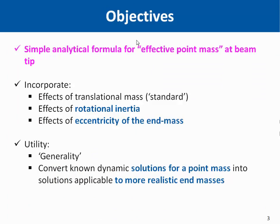The aim of our work is to develop a simple analytical formula for replacing an arbitrary shape with finite mass with an effective point mass at the beam tip, which incorporates the effect of translational mass, the effect of rotational inertia, as well as eccentricity of the end mass. The utility of this work also allows someone to convert a non-dynamic solution for a point mass into a solution applicable to a more realistic end mass system.